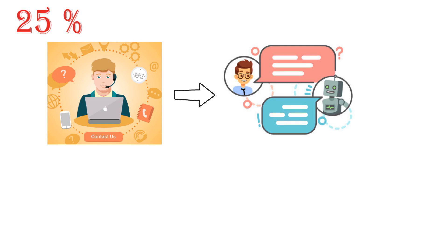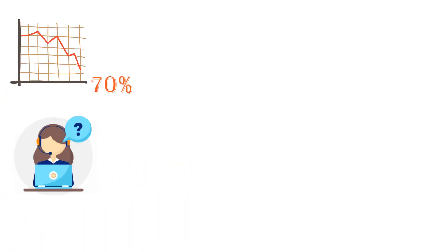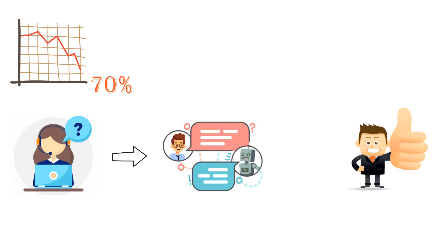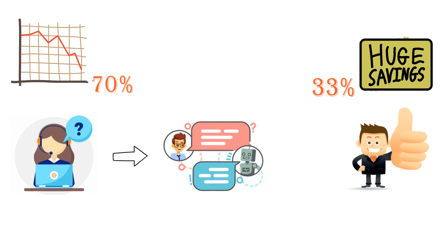Across engagement channels by 2020, up from less than 2% in 2017. Organizations report a reduction of up to 70% in call, chat, and email inquiries after implementing a VCA. They also report increased customer satisfaction and a 33% saving per voice engagement.